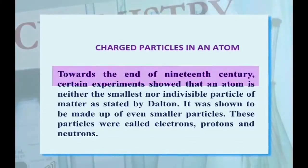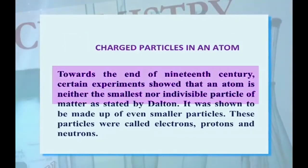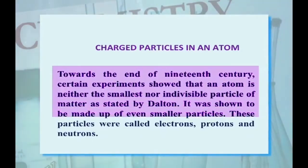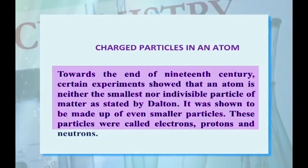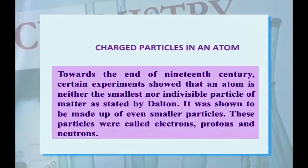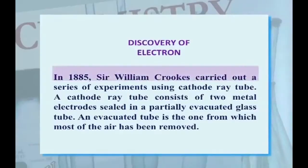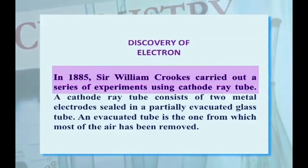Towards the end of the 19th century, certain experiments showed that an atom is neither the smallest nor the indivisible particle of matter as stated by Dalton. It was shown to have even smaller particles, which were called electrons, protons and neutrons. In 1885, Sir William Crookes carried out a series of experiments using a cathode ray tube.